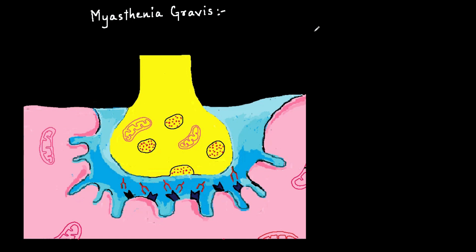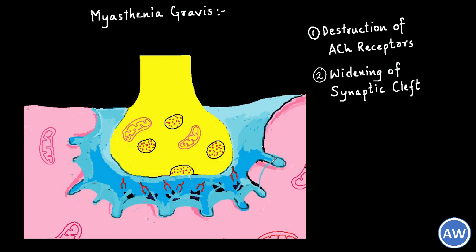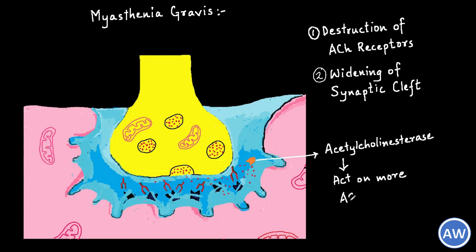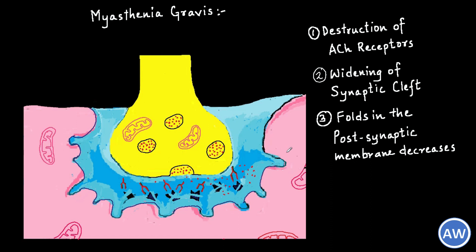Damage to the neuromuscular junction has been recognized to be threefold. First and foremost, it leads to the destruction of the acetylcholine receptors on the postsynaptic membranes. Secondly, there is a widening of the synaptic cleft, which implies that the acetylcholinesterase enzyme can act on more acetylcholine molecules, so even less acetylcholine can reach the postsynaptic membrane. Thirdly, the folds in the postsynaptic membranes are decreased, leading to a decrease in the surface area over which acetylcholine molecules can act.